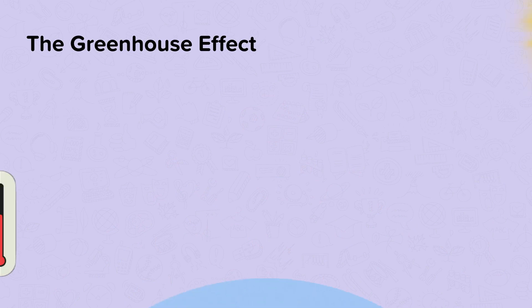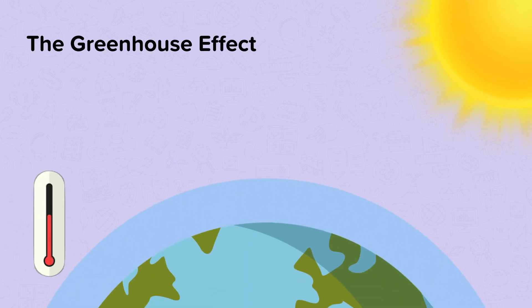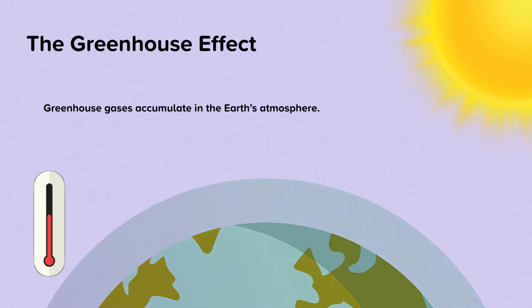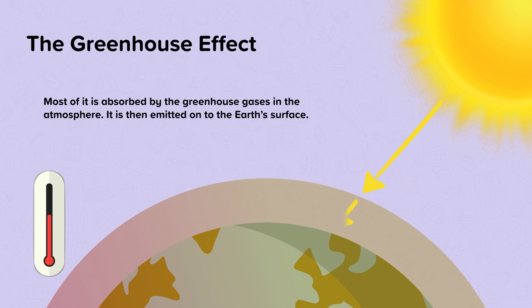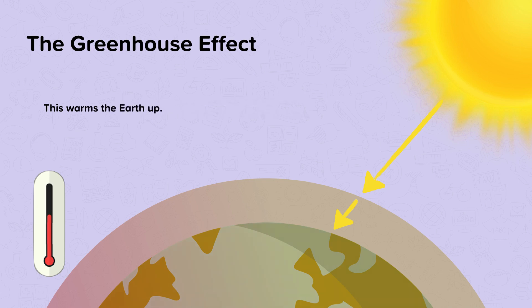Greenhouse gases contribute to the greenhouse effect. You need to know what happens in each stage of the greenhouse effect. Greenhouse gases accumulate in the atmosphere. Solar radiation from the sun travels towards the earth. Some of this is reflected by the earth's atmosphere. Most of it is absorbed by the greenhouse gases in the atmosphere and is then emitted onto the earth's surface, warming the earth up.